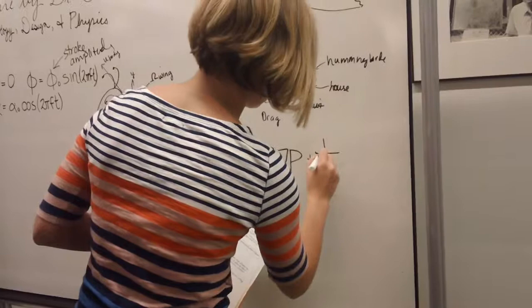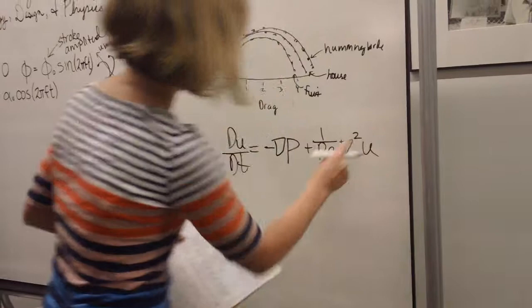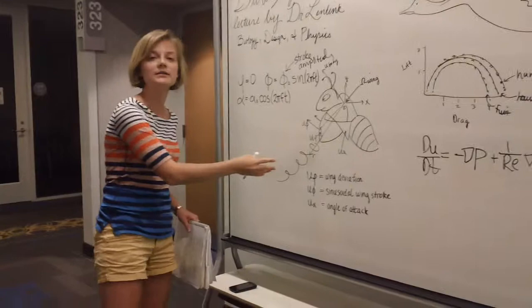So negative change in p, which is pressure around the air of it. And then you have plus one over constant Reynolds number. And you multiply that by the change squared in u, which is all these components over here. And that changes the vortex of these wings.